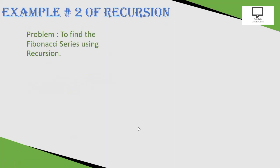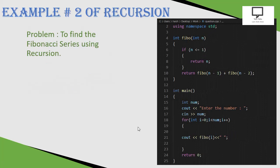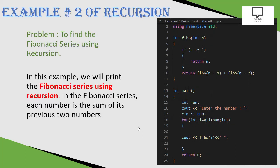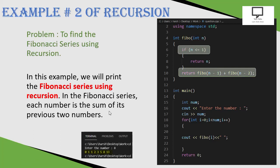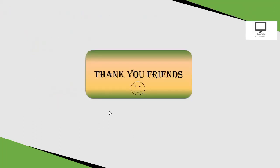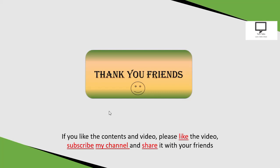The second example is finding the Fibonacci series using recursion. In the Fibonacci series, each number is the sum of its previous two numbers. The base case and recursive case are shown here, and the function produces the Fibonacci sequence as output. Thank you friends for watching this video. If you like the content, please share it with your friends and do not forget to subscribe to my channel.